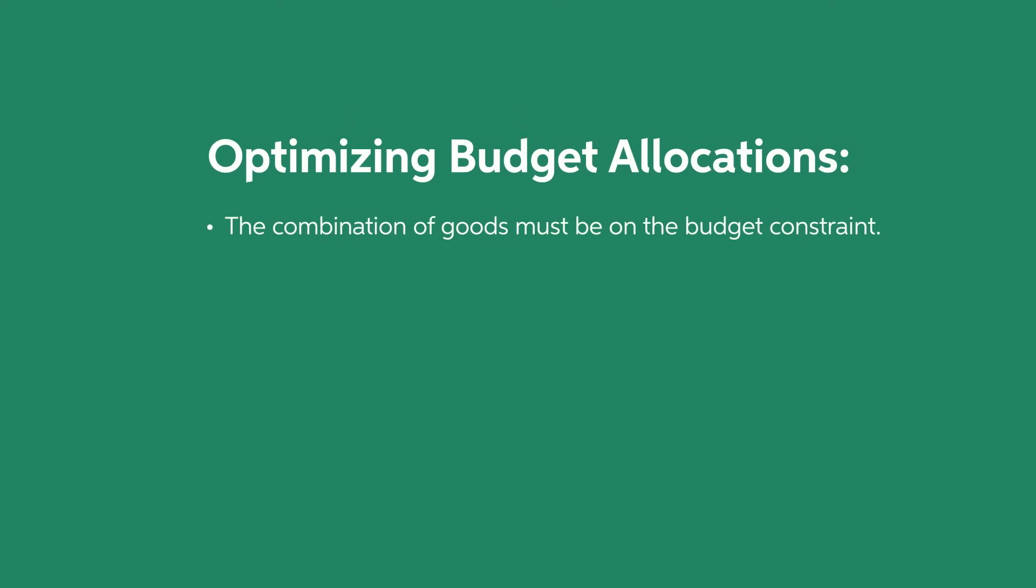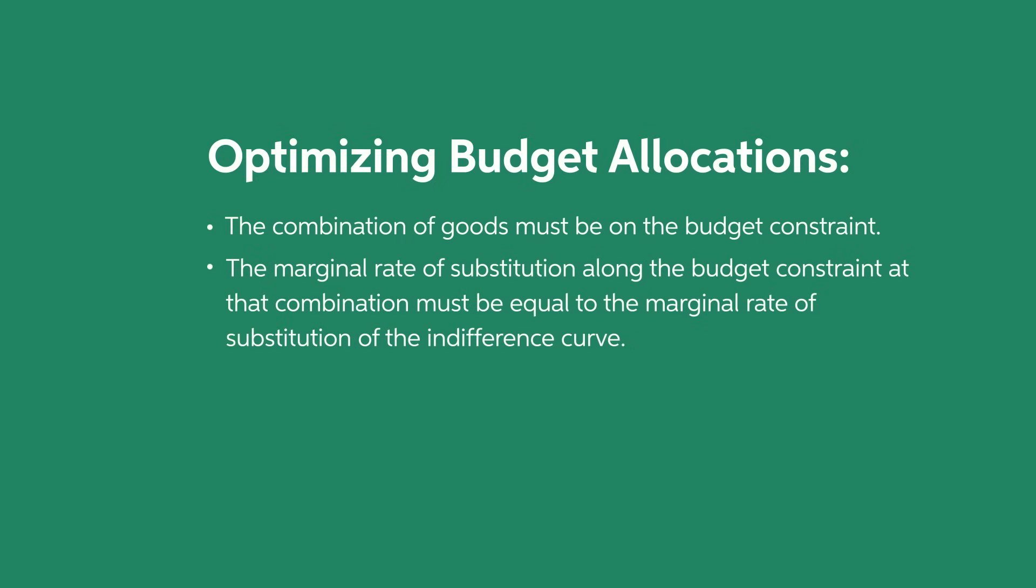Consumers optimize their budget allocations when they consume a combination of goods that have two important characteristics. First, the combination of goods must be on the budget constraint. Second, the marginal rate of substitution along the budget constraint at that combination must be equal to the marginal rate of substitution of the indifference curve.